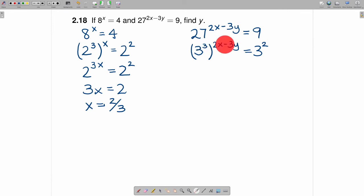And when you do that, you get 3 raised to the 6x minus 9y power is equal to 3 squared. We now have the same base here as here, which means this power must be equal to this power. And that's going to be 6x minus 9y is equal to 2.